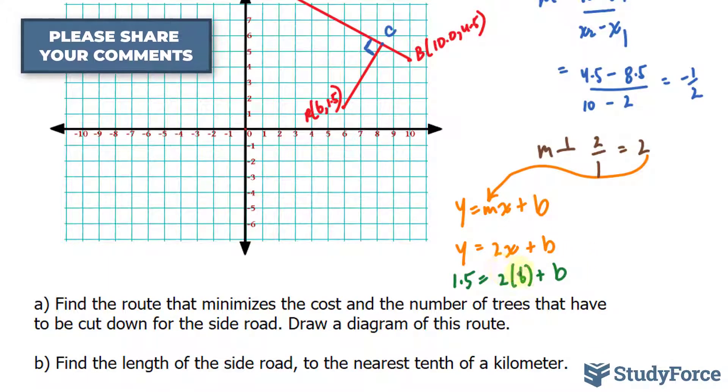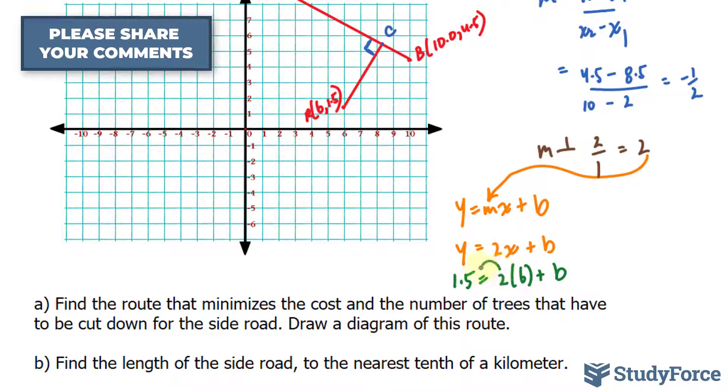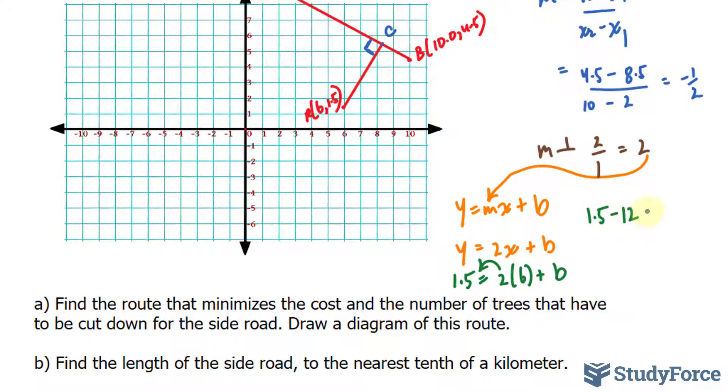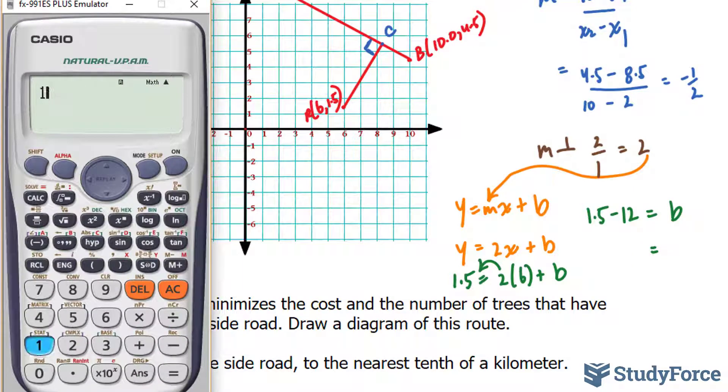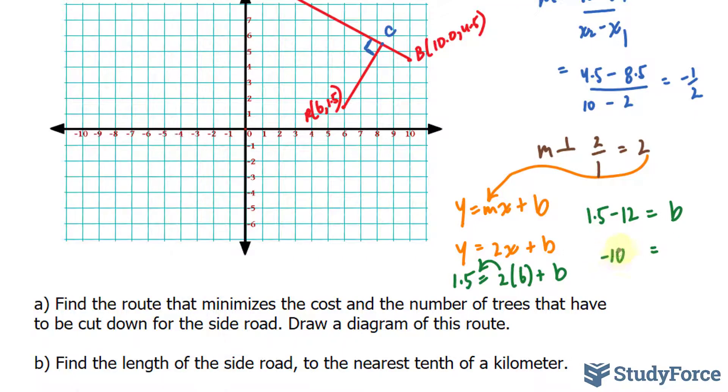If I solve for b, I need to take 2 times 6, which is 12, over to this side. So I have 1.5 minus 12 equals b. Using my calculator, 1.5 minus 12 equals negative 10.5. So the equation for this line, RC, is y equals 2x minus 10.5.